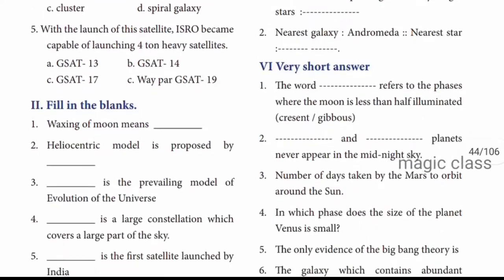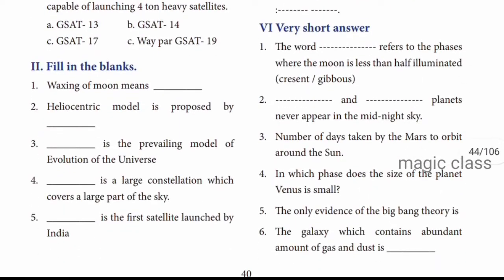Next is fill in the blanks. First one: Waxing of moon. Waxing means growing or expanding in size. We studied waxing and waning of the moon. Waxing means growing or expanding in size, and waning means shrinking in size.